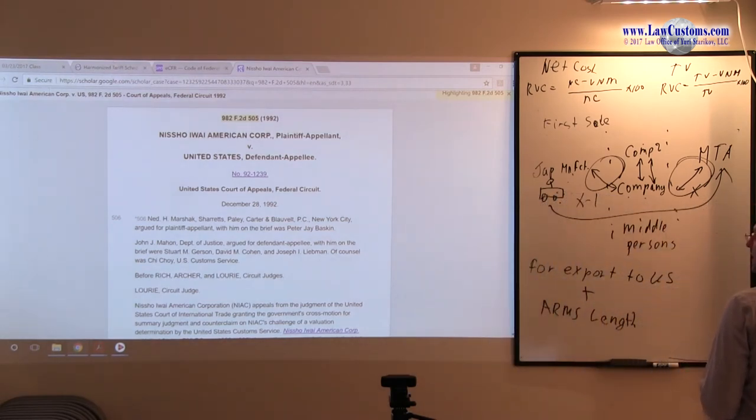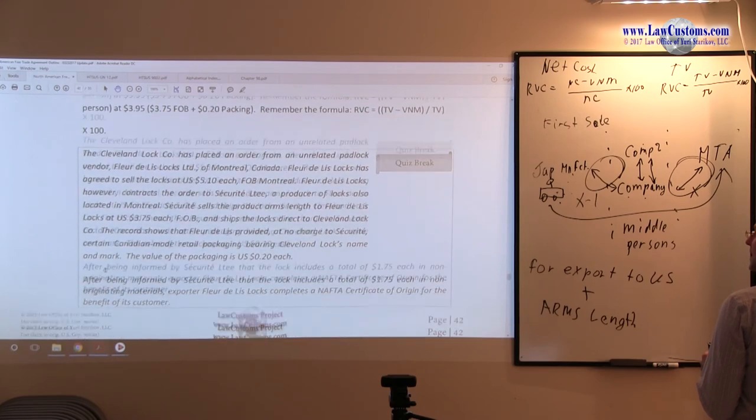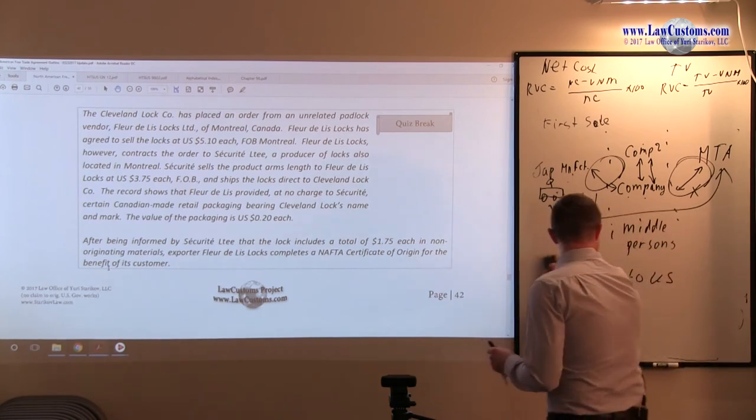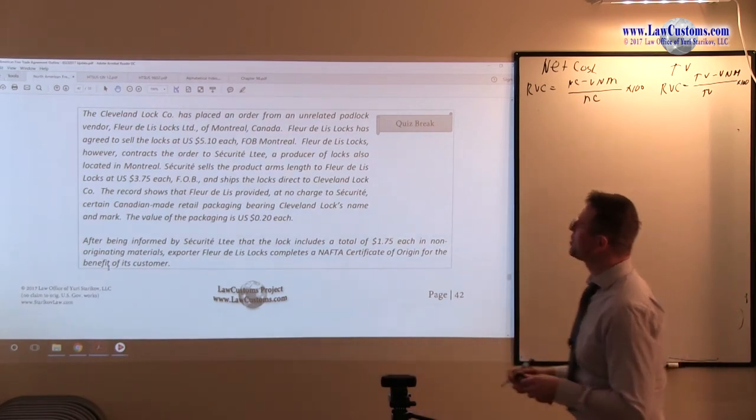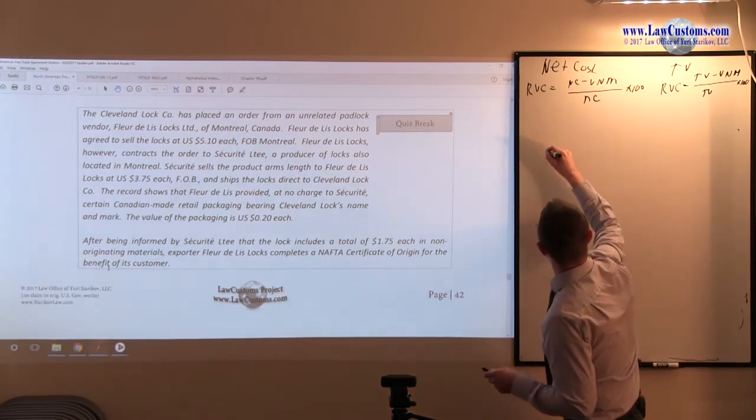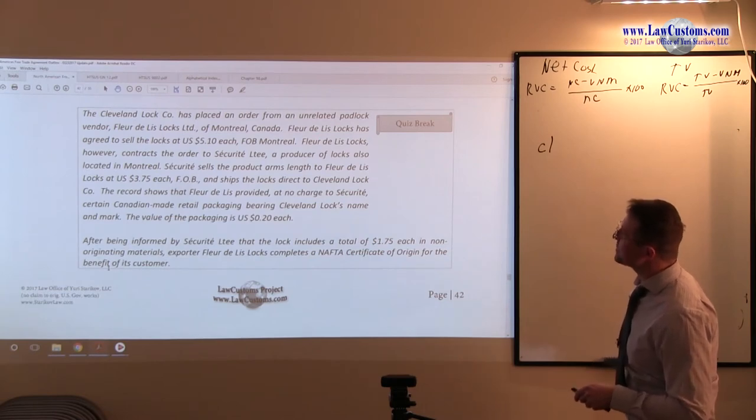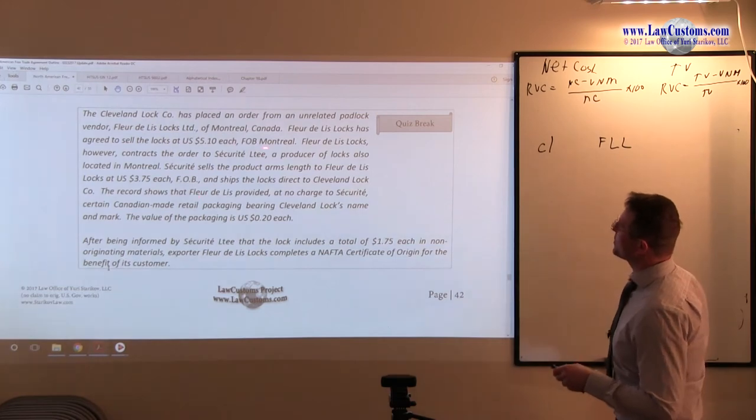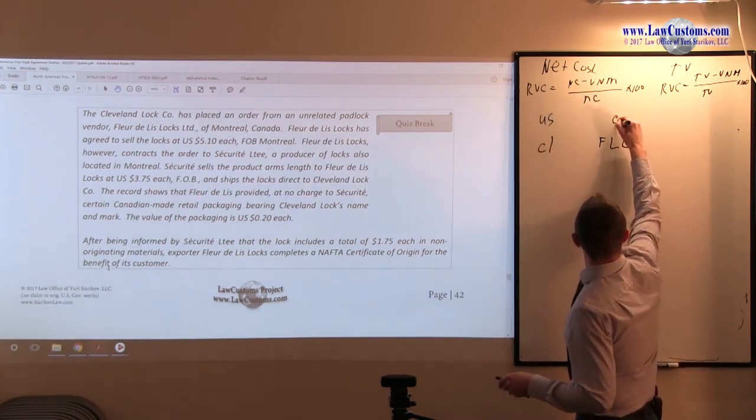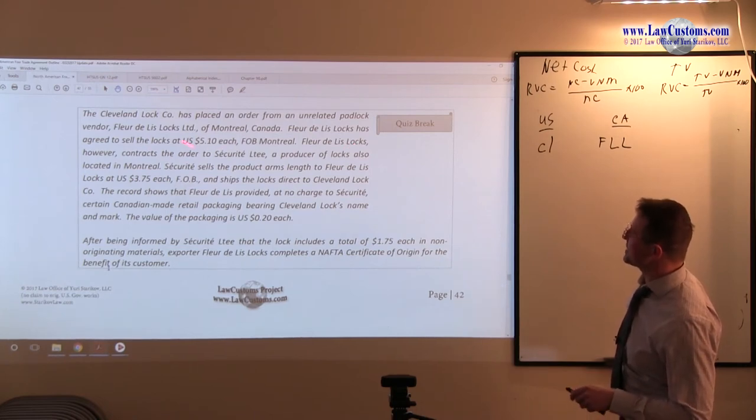Now, so, the link is here. If you are curious, you are welcome to read through this. But let's go back to the outline and see why this concept is so important and how it broke out in the licensed customs broker exam. So, let's take a look. The Cleveland Lock Corporation. So, we have Cleveland Lock. has placed an order from the unrelated padlock vendor, Fleur Delis Locks, FLL, of Montreal Canada. So, I assume this is United States. This is Canada.